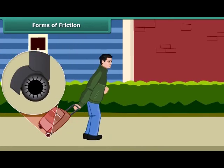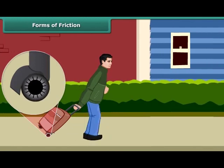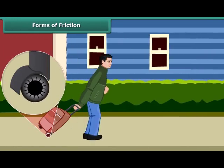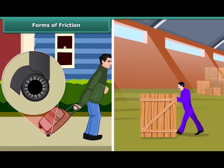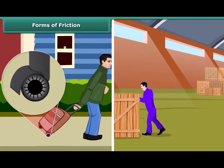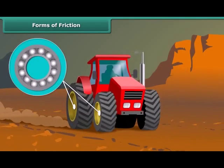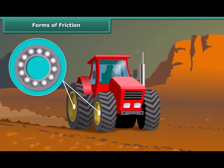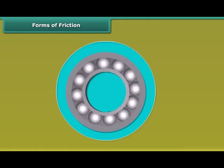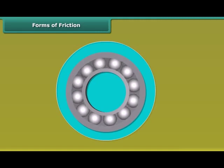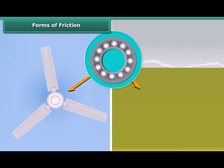The force of friction between the rollers on a body and the surface is called rolling friction. Rolling friction is much less than sliding friction. Since rolling friction is smaller than sliding friction, sliding is replaced in most machines by rolling, through the use of ball bearings. Common examples are the use of ball bearings between hubs and the axles of ceiling fans and bicycles.